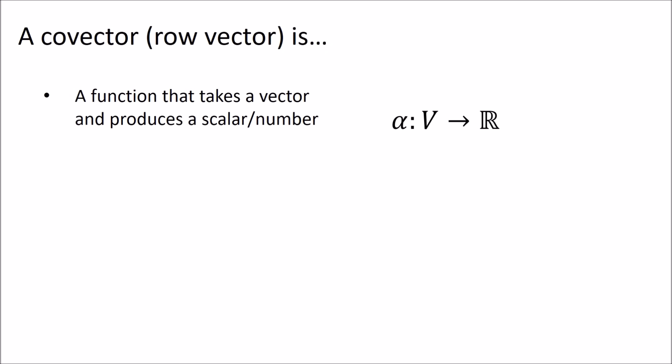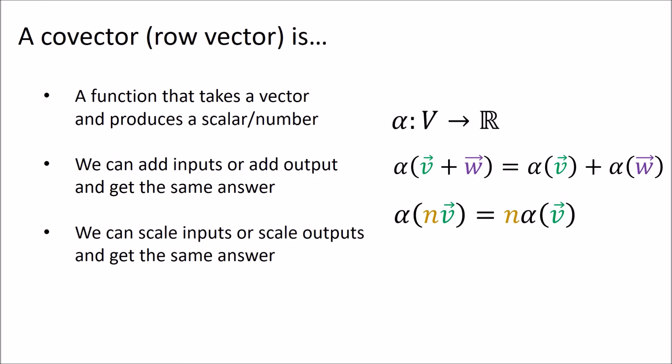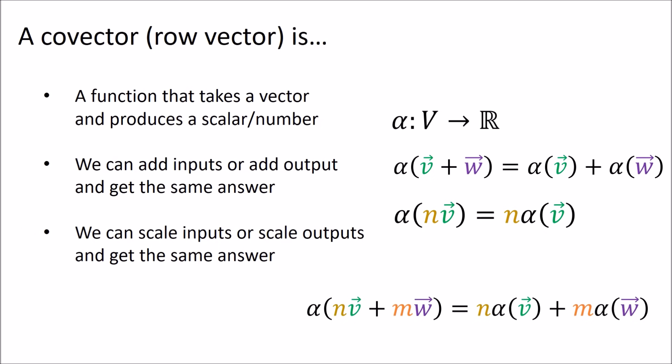To sum up, a co-vector is a function that takes a vector and produces a scalar or a number. It has the property that we can add the inputs or add the outputs to get the same answer, and the property that we can scale the inputs or scale the outputs by the same amount and get the same answer. These two properties together look like one combined condition, and this behavior is called linearity. So co-vectors are linear functions.